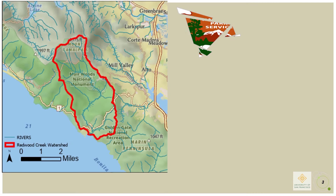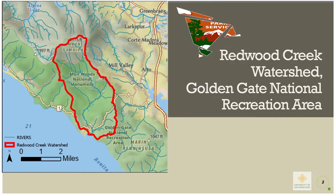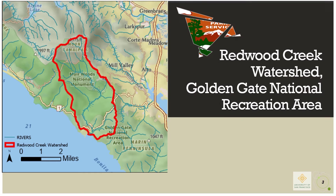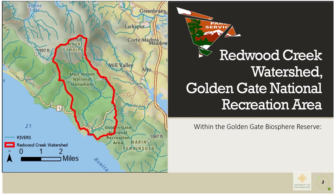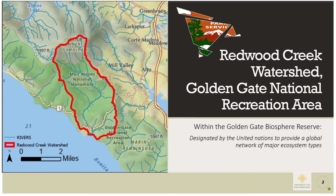Our project study area is the Redwood Creek Watershed in Golden Gate National Recreation Area. Redwood Creek is located in Muir Beach in Marin County, California, and it is within the Golden Gate Biosphere Reserve, designated by the United Nations to provide a global network of major ecosystem types. This is the focus area of our study.